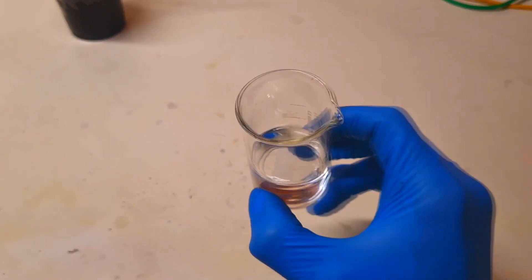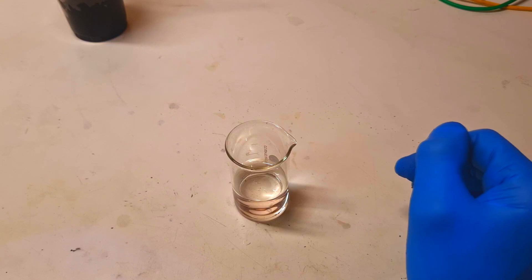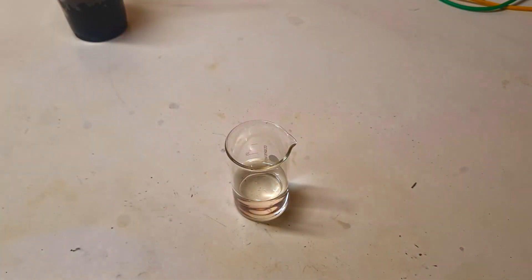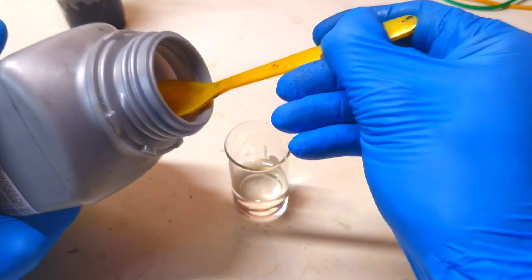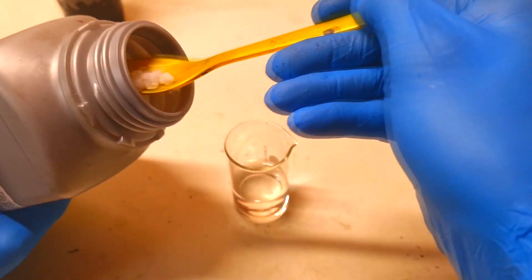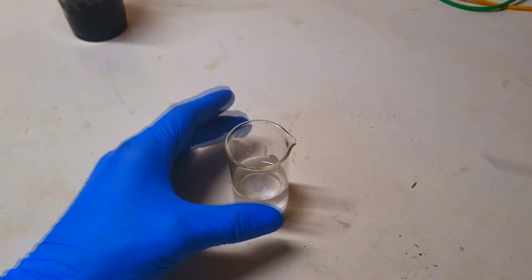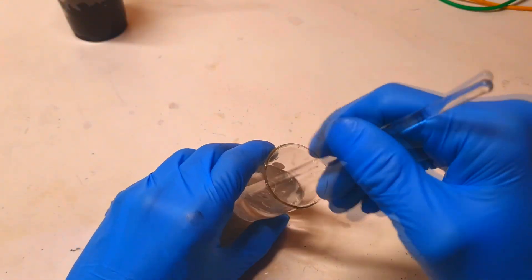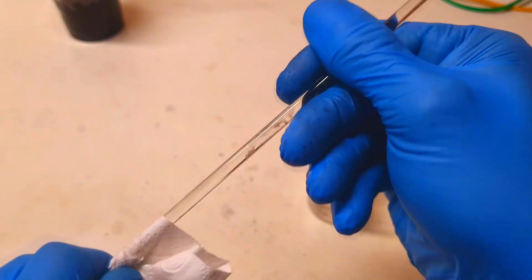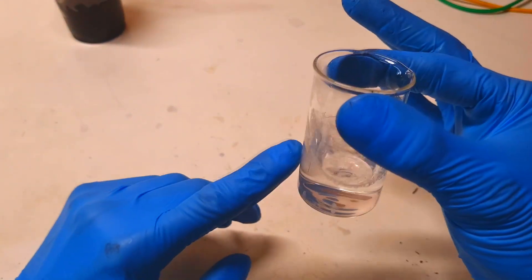Here in this beaker I have 25 milliliters of water. And to this water I will also put some sodium hydroxide because I also need some electrolyte. Here I have sodium hydroxide. Just a little bit, this will be fine. Here I have my electrolyte.